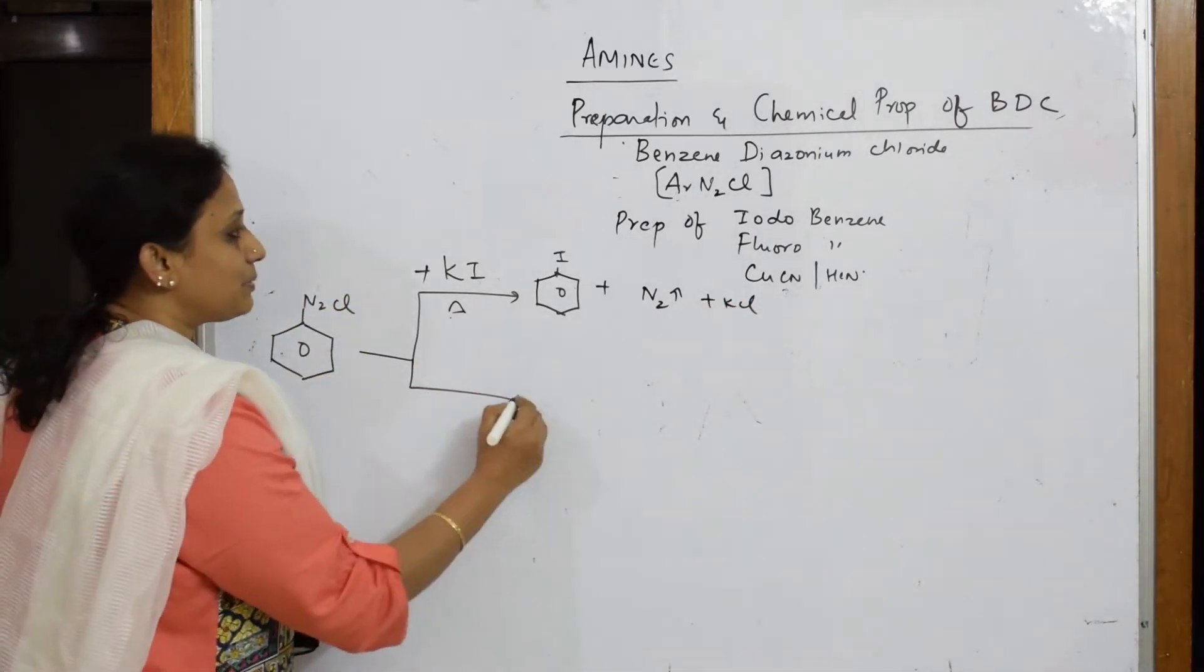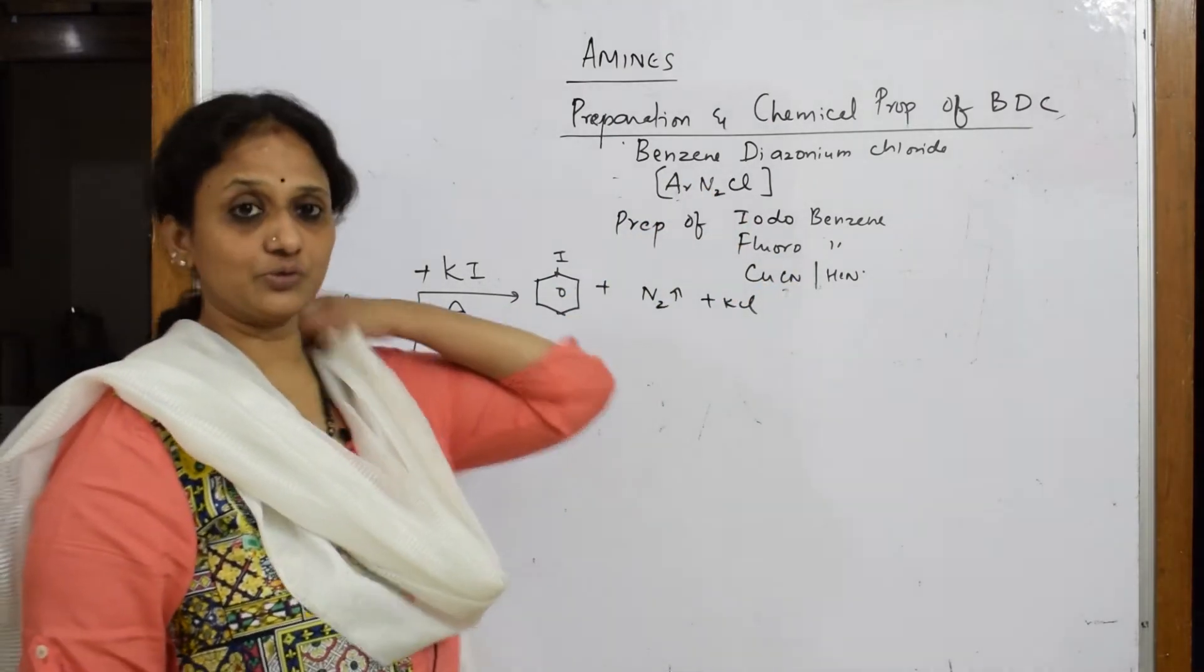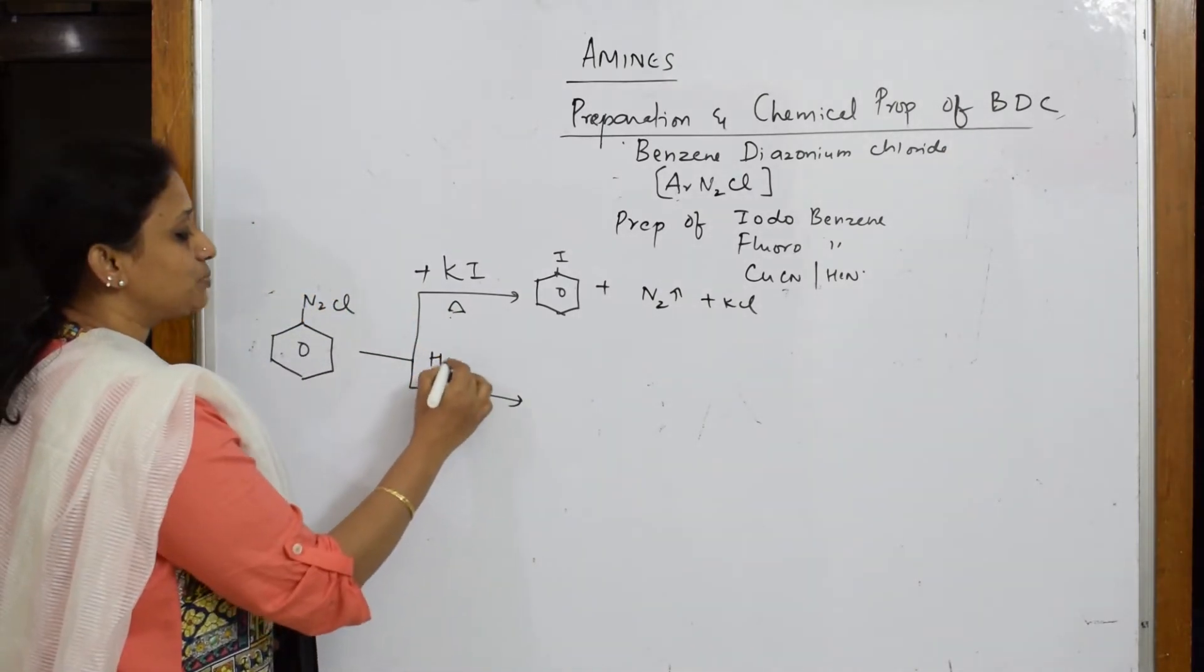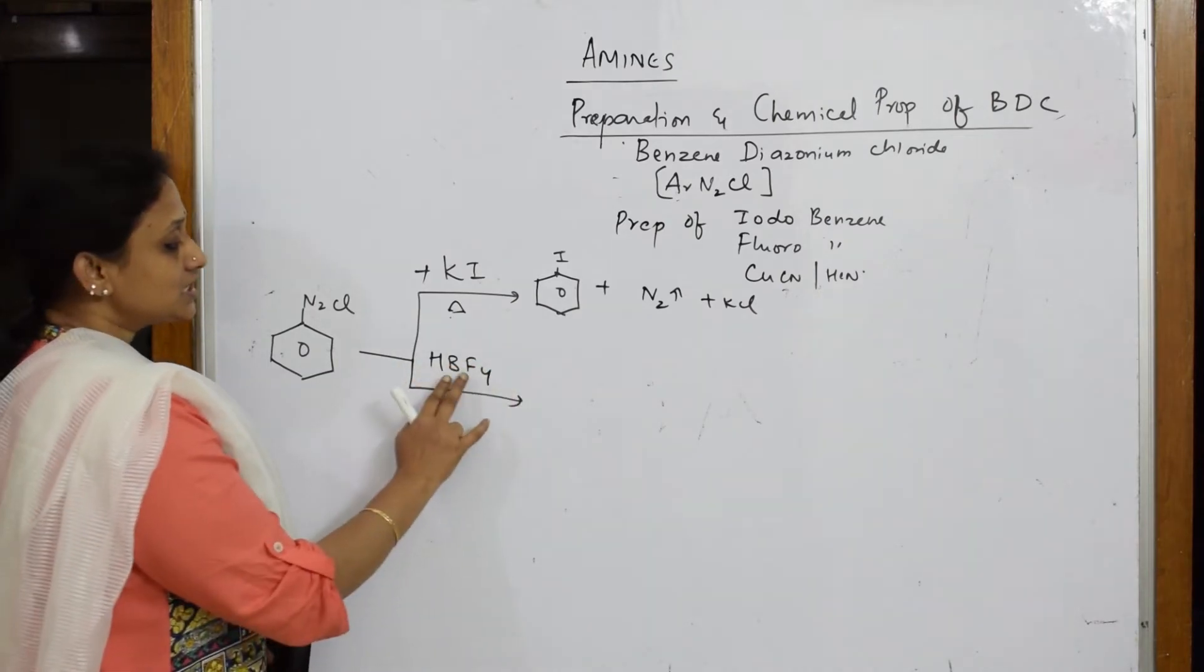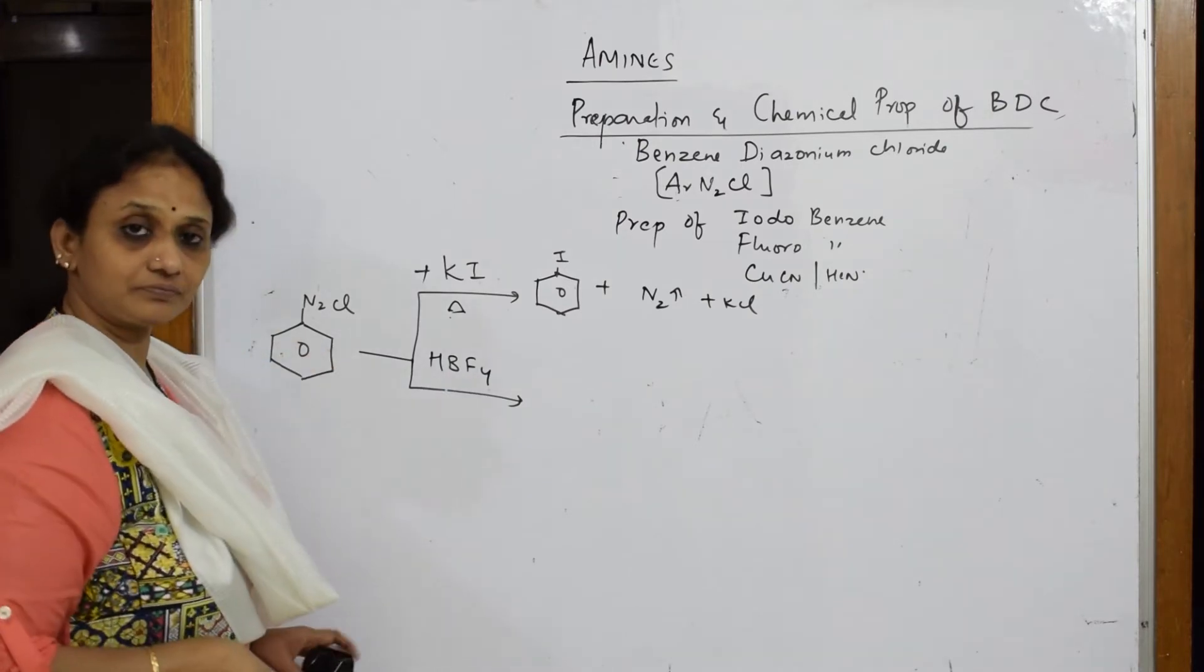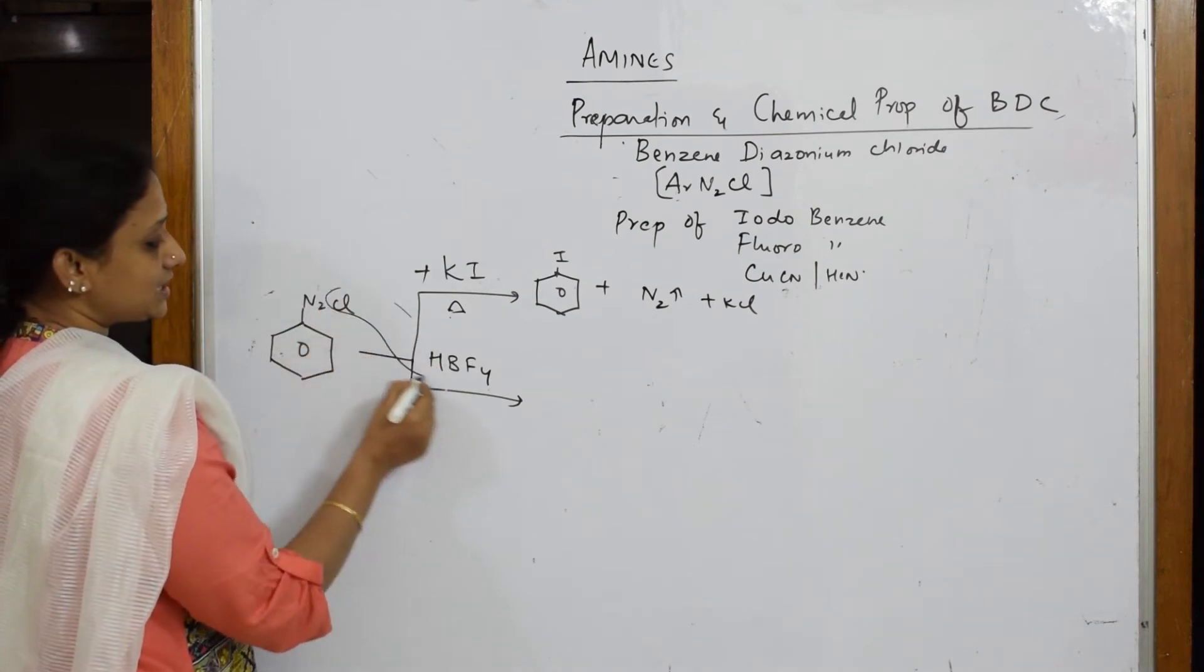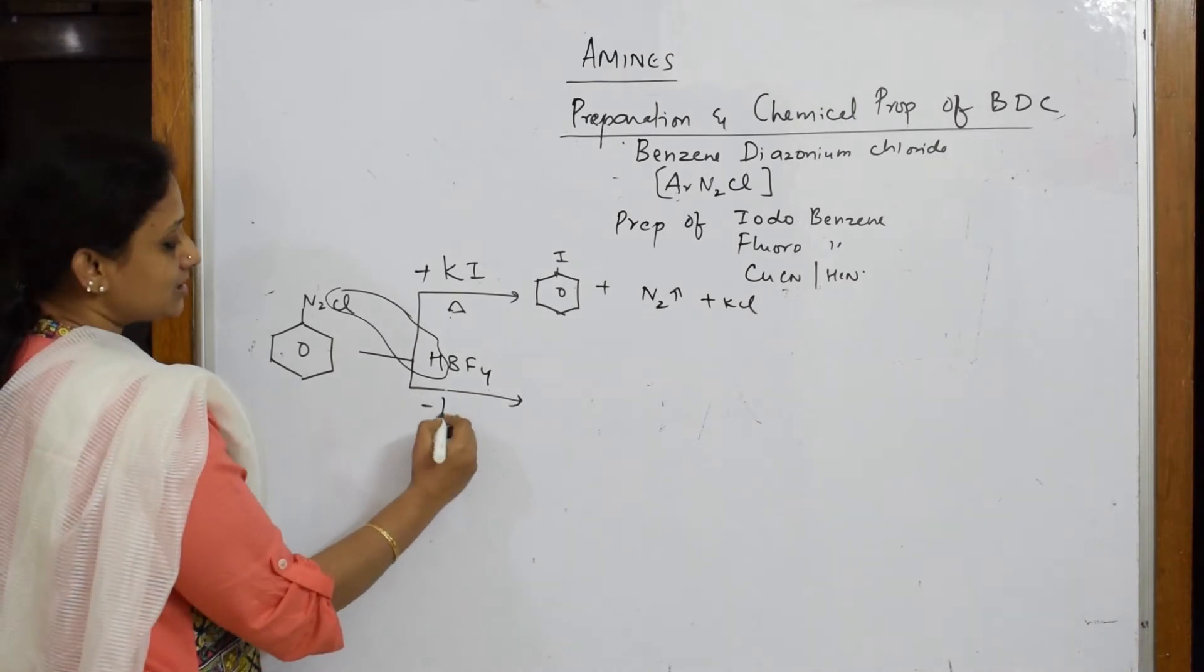After this, let me prepare fluorobenzene. Preparing fluorobenzene, you will not use HF or something. No, wrong. You are going to use a compound called HBF4. Very important. This HBF4 is going to carry fluorine to BDC. How does this work? Whenever you are adding HBF4 to this, first, your HCl comes out because I have to replace with fluorine. So minus HCl.